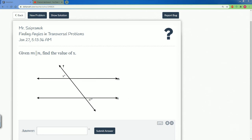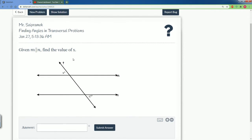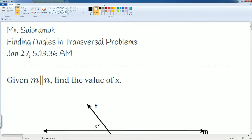Welcome, this is the Delta Math solution tutorial covering finding angles in transversal problems. Here we are given that m is parallel to n. You're going to find the value of X. Let's take a closer look here.